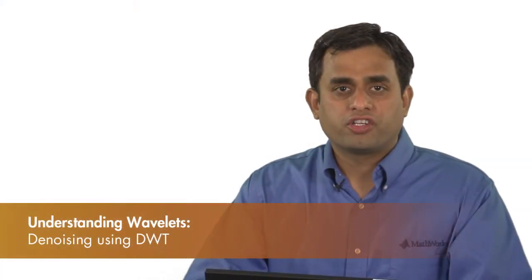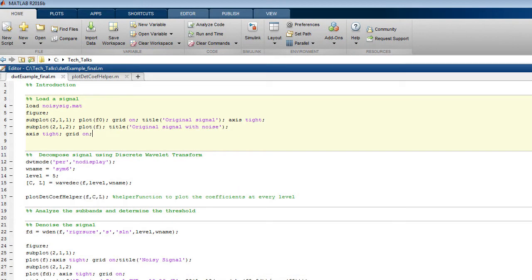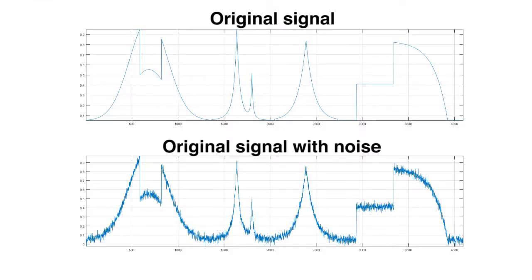In this video, we will discuss how to use MATLAB to denoise a signal using the discrete wavelet transform. Let us load a signal and plot it in MATLAB. There are two signals here. The first is the original signal and the second one is the original signal with some noise added to it. Our goal here is to denoise the noisy signal using the discrete wavelet transform. Soon you will see how easy it is to do this in MATLAB.